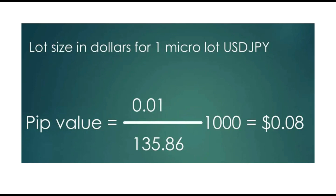When you divide that, you multiply by 1000 and then you get the pip value in dollars. The formula is straightforward, but we can make it even easier. I will show you in this video how to calculate lot size for Japanese yen pairs very, very fast.